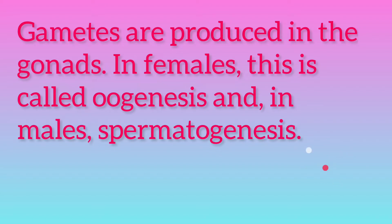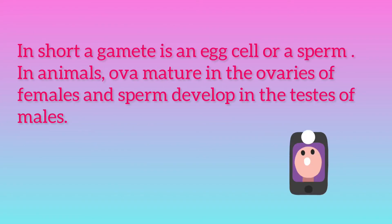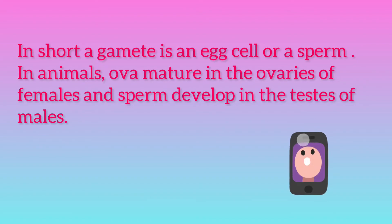Sperm cells or spermatozoa are small and motile due to the flagellum, a tail-shaped structure that allows the cell to propel and move. In contrast, each egg cell or ovum is relatively large and non-motile. In short, a gamete is an egg cell or a sperm.